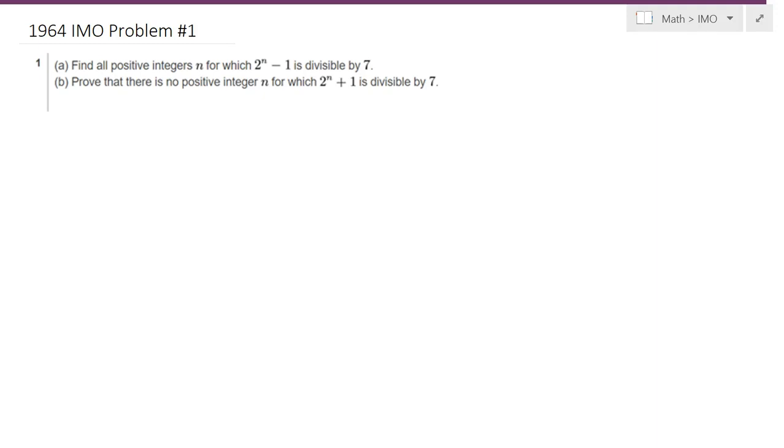Hello everybody, in this lecture we will be solving 1964 IMO problem number one. In part a, we would like to find all positive integers n for which 7 divides 2 to the n minus 1.